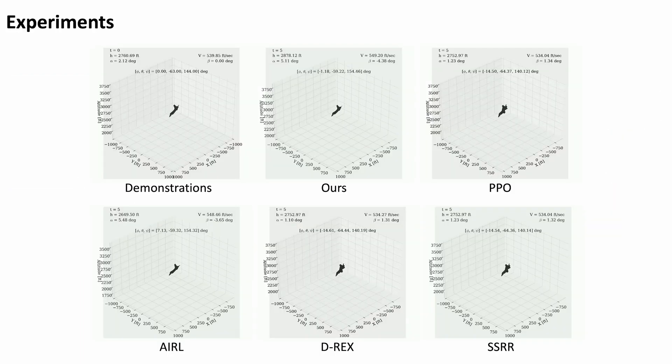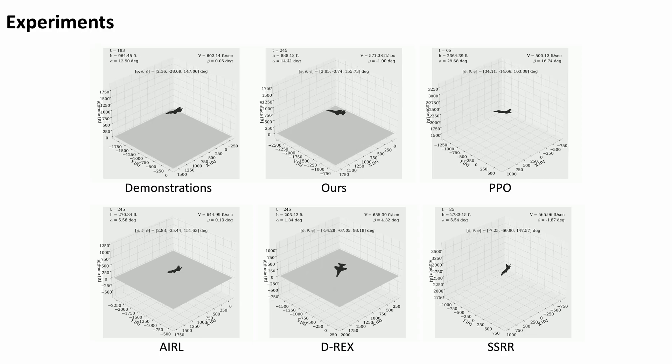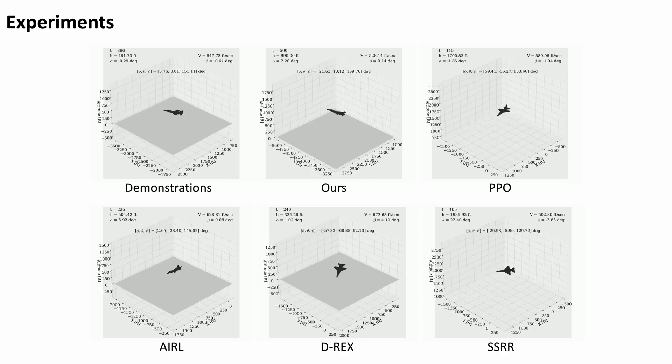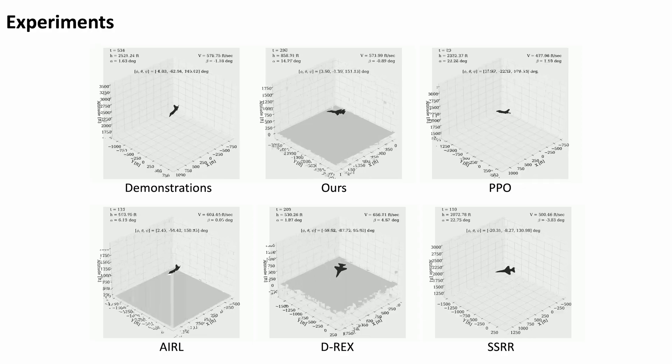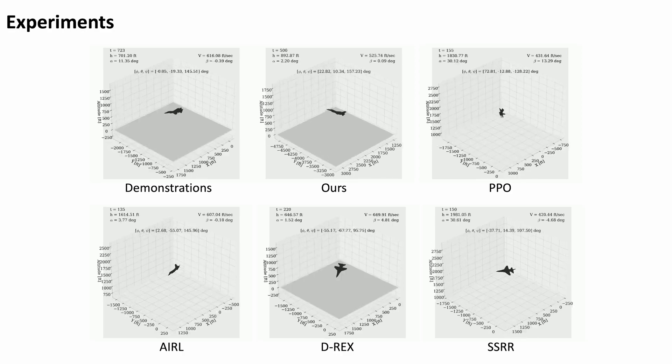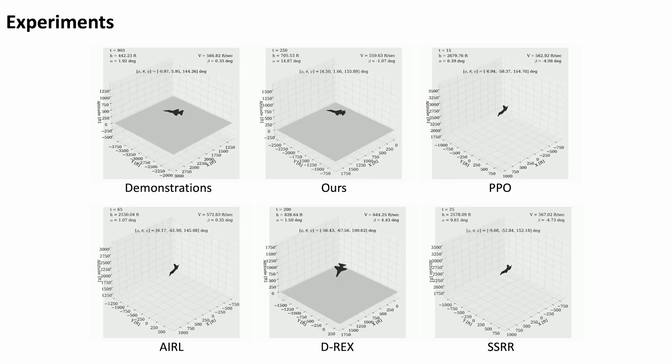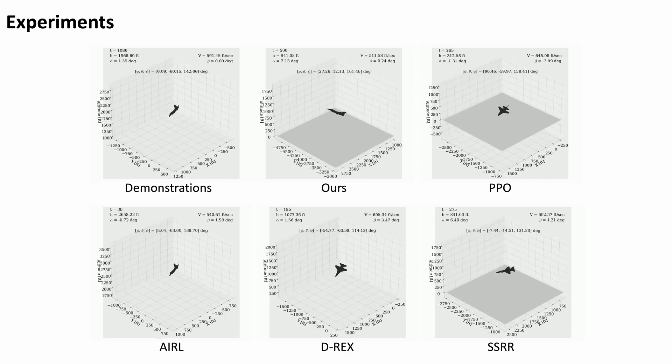We conduct experiments on the F-16 system. Given demonstrations that only pull up the F-16 at a very low altitude, our algorithm can pull up the fighter at a much higher altitude and stabilize it at our desired altitude of about 1000 feet.